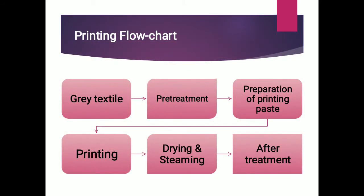Let us see the printing flow chart. At first gray textile, then it is treated with pre-treatment. Then printing paste is prepared, then printing, then drying and steaming, and at last after treatments.